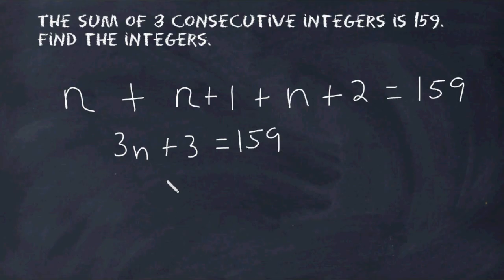Next we're going to do the inverse of adding 3, which is to subtract 3 from both sides of our equation. And that leaves us with 156 on the right hand side, and on the left hand side we have 3n remaining.